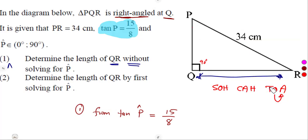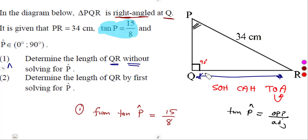From our SOHCAHTOA, the tan of a given angle is opposite over adjacent. In this case, we are talking about the tan of angle P. So the tan of angle P equals opposite over adjacent. What is the opposite? According to angle P, the opposite side is QR — the one that we need. And the adjacent side is PQ.